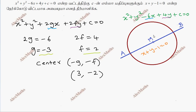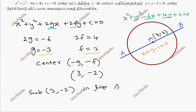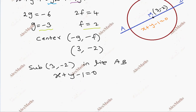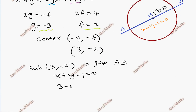The center of the circle must satisfy the diameter line. So, substituting the point (3, minus 2) into line AB: x plus y minus 1 equal to 0. We get 3 minus 2 minus 1 equal to 0, so 0 equals 0. This is satisfied.